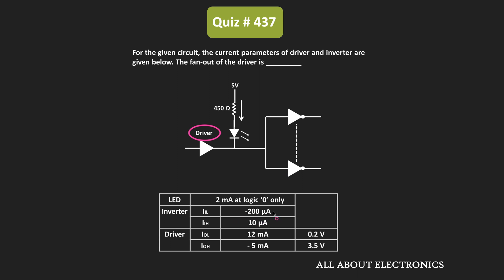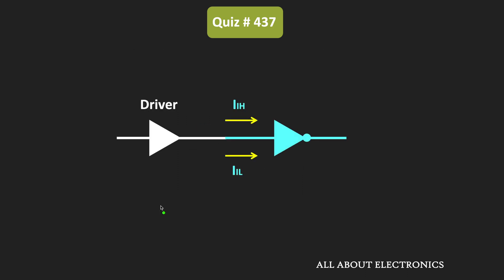So to find the fan out, we have been given the input parameters for the inverter as well as the output parameters for the driver. But if you notice, these two currents are negative. That means the value of this IIL current as well as the IOH is negative. So first of all, let us find out why the value of these two currents are negative. If you see the datasheet of any logic gate, then you will always find that the value of the current IIL as well as the IOH is negative.